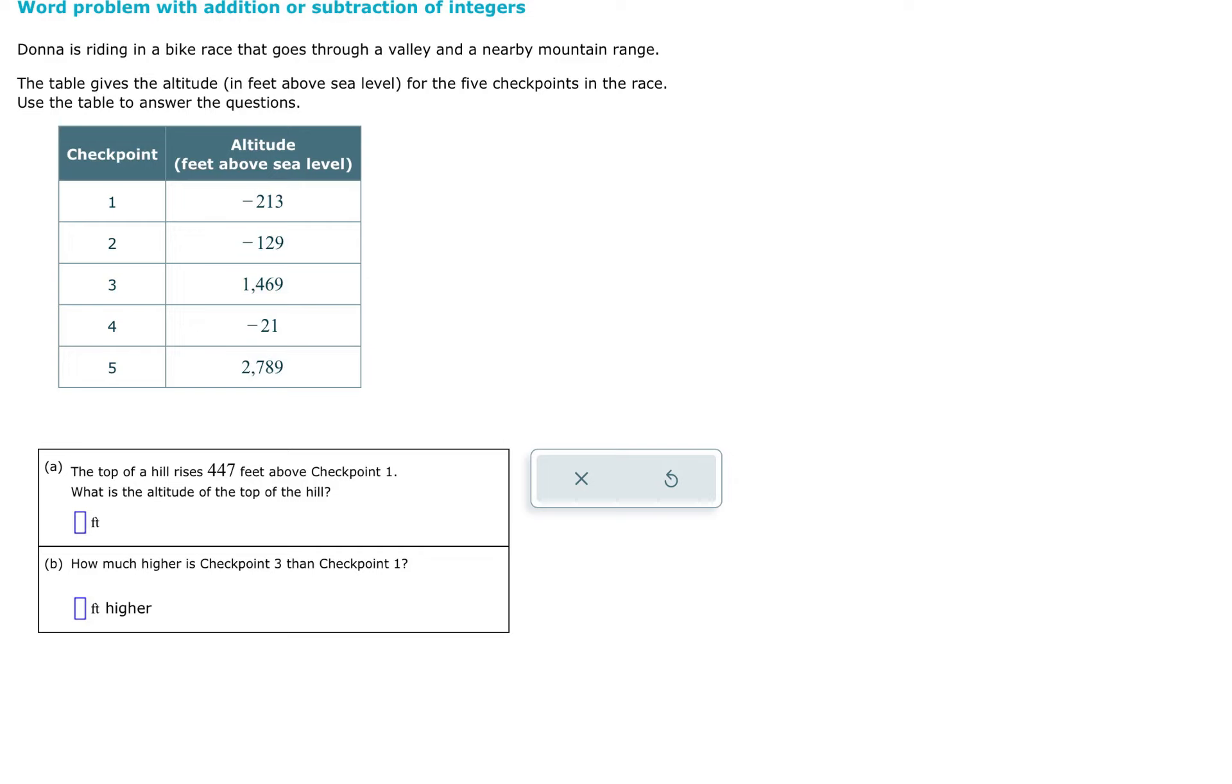Problem A says the top of a hill rises 447 feet above checkpoint one. What is the altitude of the top of the hill? So I'm going to draw a quick sketch just to try to make this a little bit more clear. We're going to pretend like we have some water here and it's going to meet a land, go into a valley and then maybe a hill eventually.